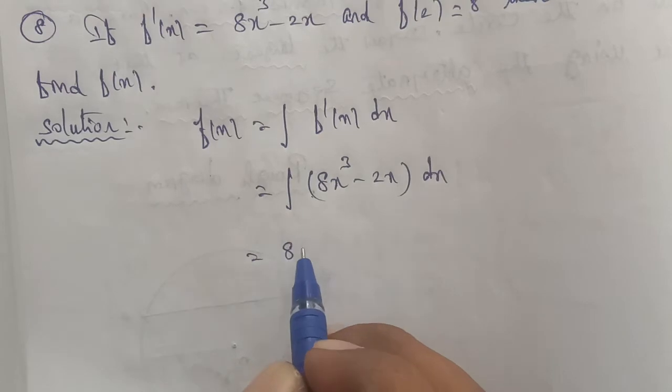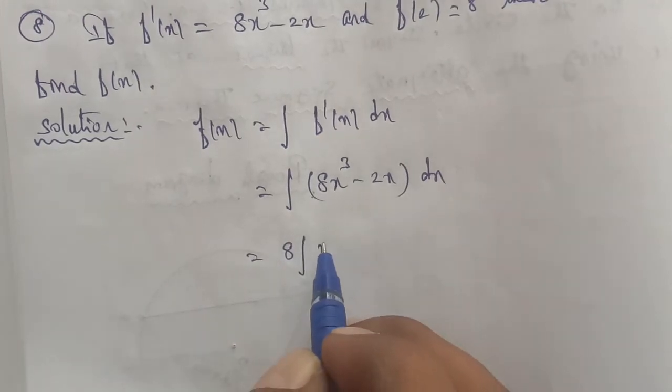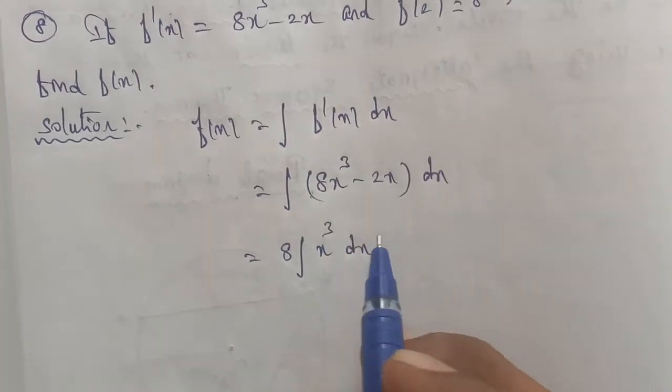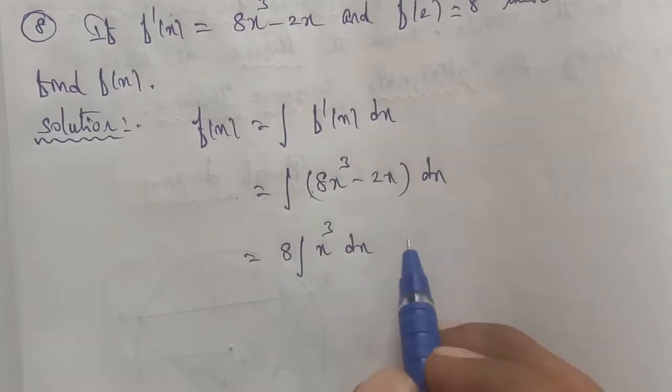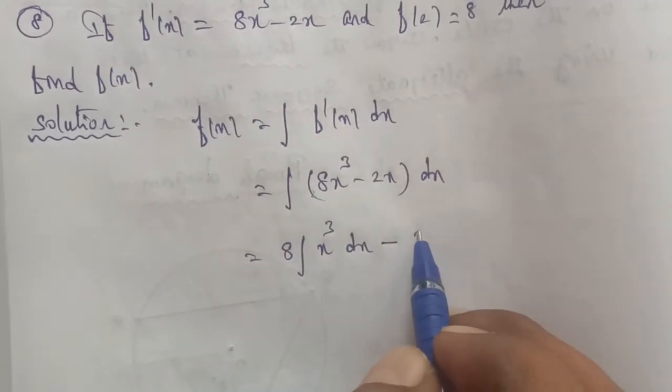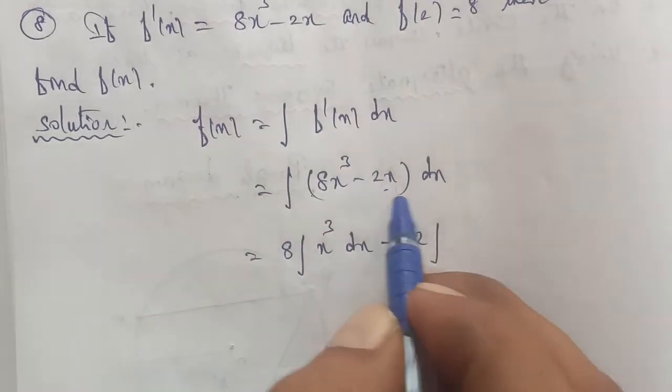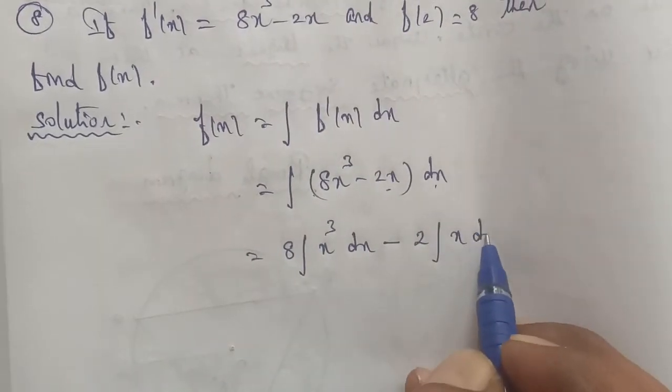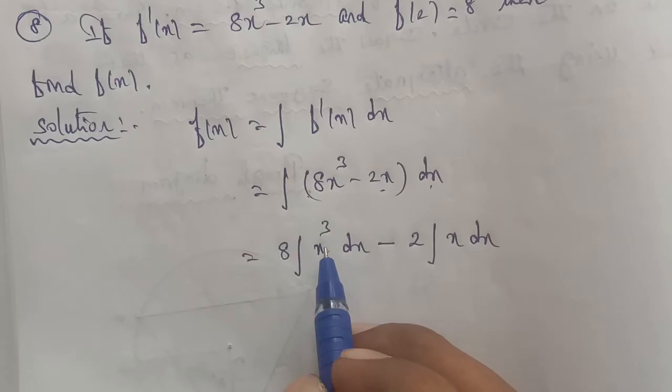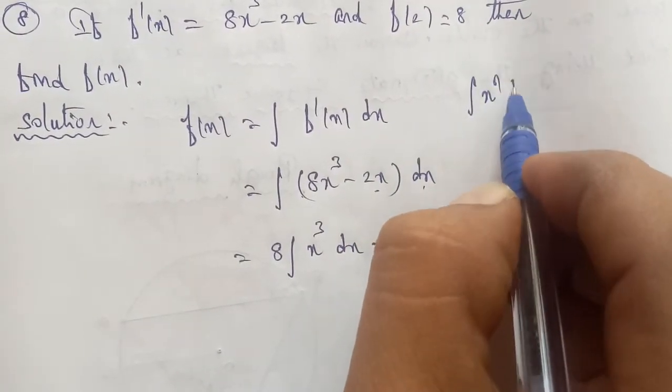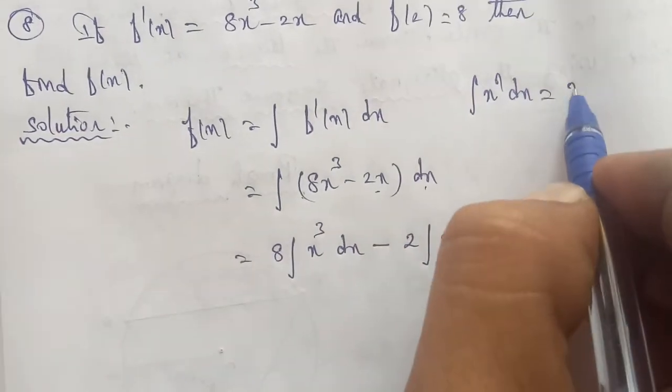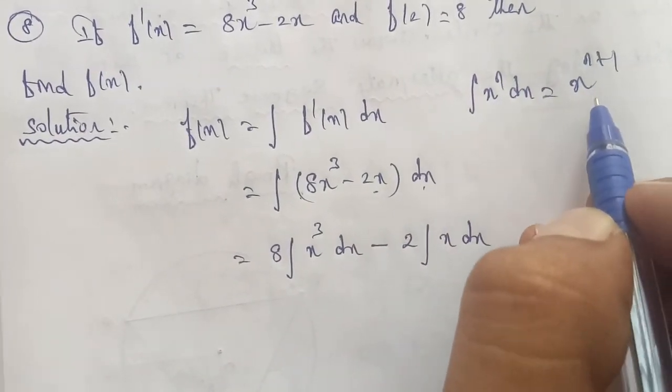Removing the constant, we get 8 times the integration of x³ dx, minus 2 times the integration of x dx. We apply the integration formula: the integration of x^n dx equals x^(n+1) divided by (n+1).